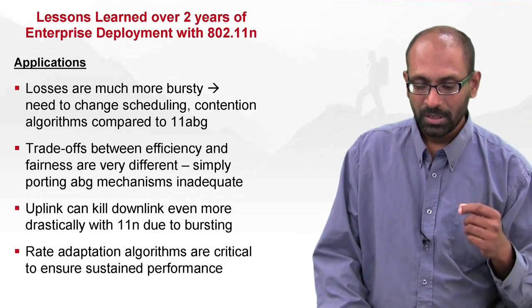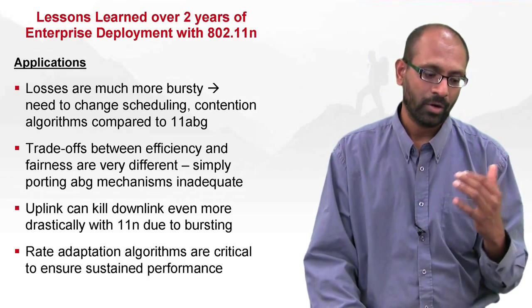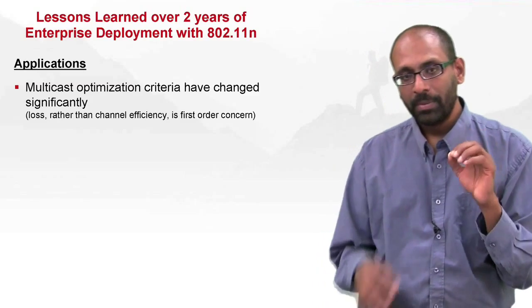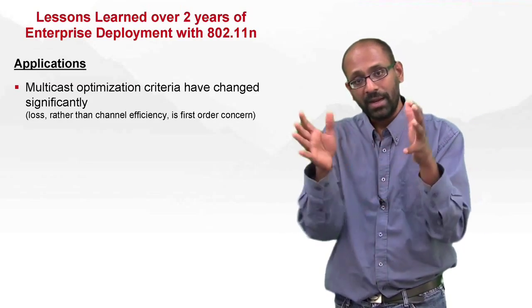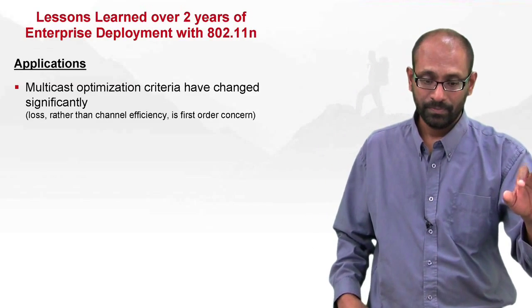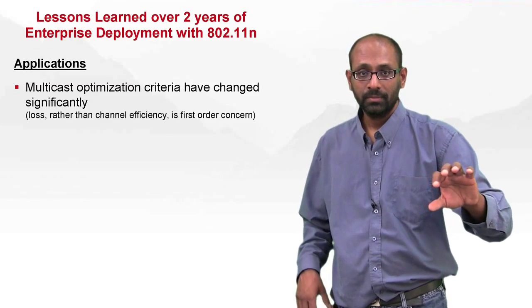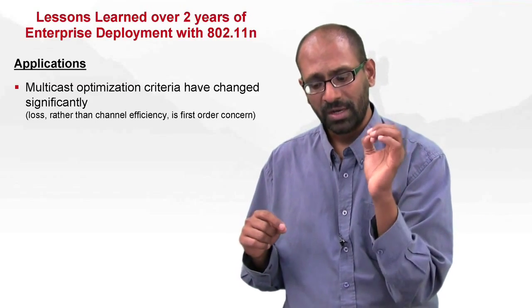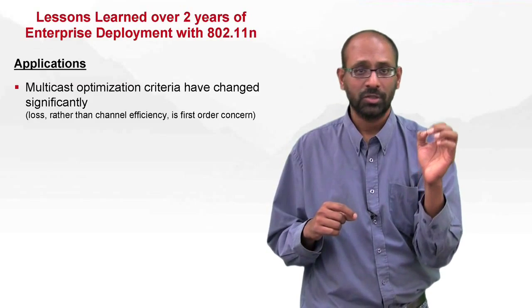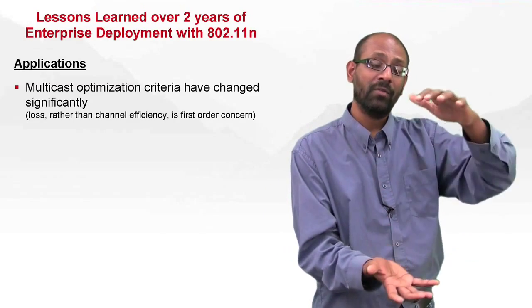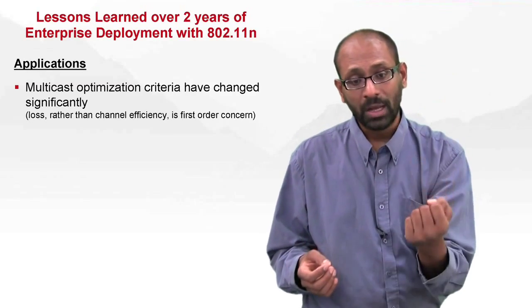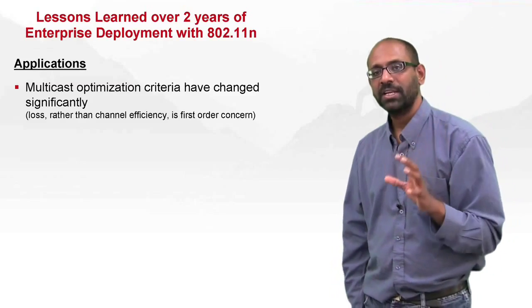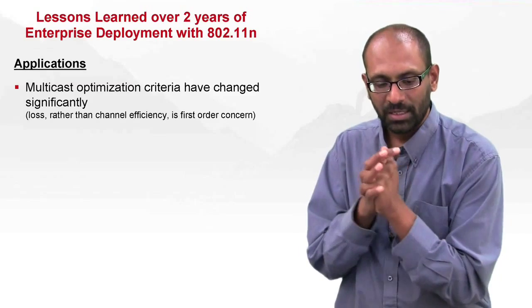We also looked at the implication of rate adaptation algorithms. Picking the right rate at which to send is really important because if you get it wrong, you could lose a whole burst, not just one frame. Regarding multicast: with ABG you had less capacity but less loss, so the focus was on optimizing capacity and minimizing inherent loss. With 11n, you have a lot more capacity but a lot more loss, so it makes sense to pull down the rate and minimize loss rather than try to up the rate and minimize time. The key point is multicast with 11n inherently could have issues.